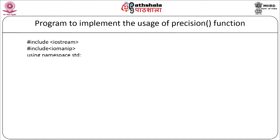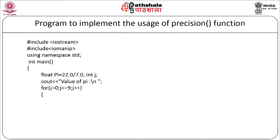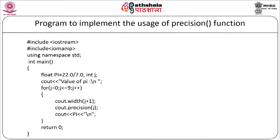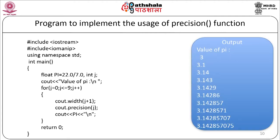Let us see a program to implement the precision function. We start with hash include iostream, hash include iomanip, using namespace std. In main: float pi = 22.0 / 7.0, integer j. We display 'value of pi:' then use a for loop for j equal to 0, j less than or equal to 9, j++. Inside the loop: cout.width(j+1), cout.precision(j), and cout the value of pi. When compiled and executed, it produces: value of pi: 3, 3.1, 3.14, 3.143, 3.1429, 3.14286, and so on, with width and precision incrementing by 1 each iteration.